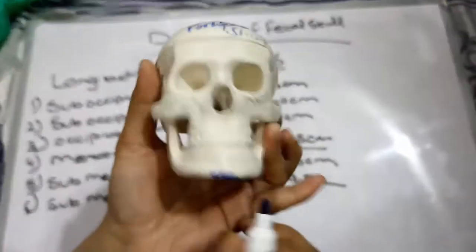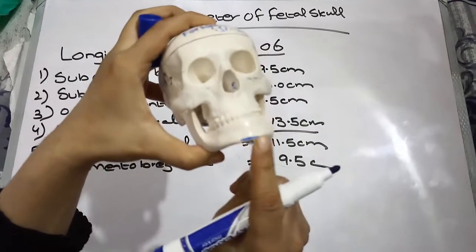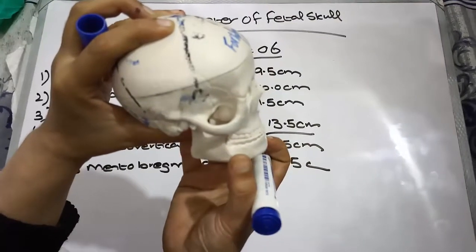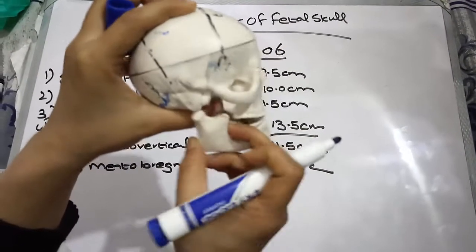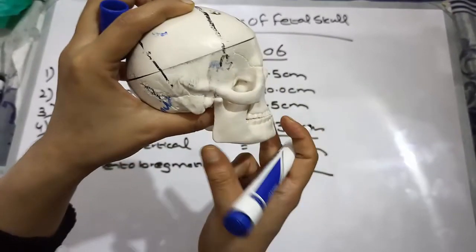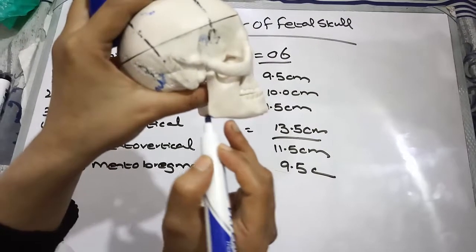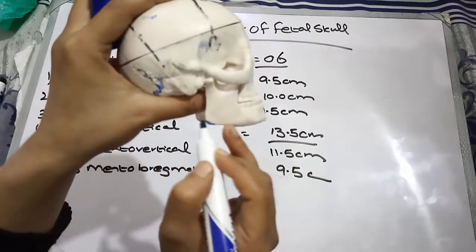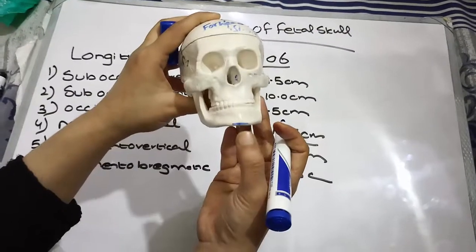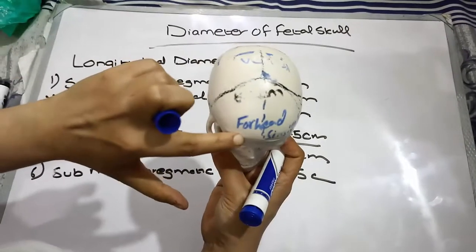Next you should know this is our chin, also called the mentum. This is the body of our mandible, and the upper projections are the ramus. The inferior and posterior region of the ramus is known as the sub-mental or sub-mandibular region. So remember: the mentum (chin), the sub-mental region, the forehead and sinciput, the vertex, and the occipital.